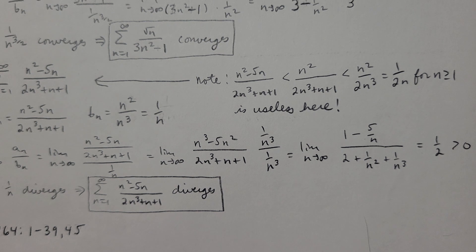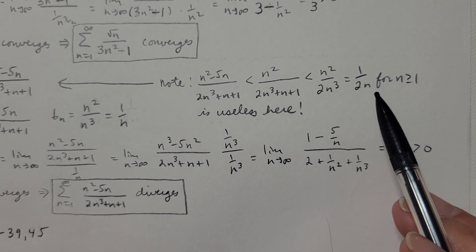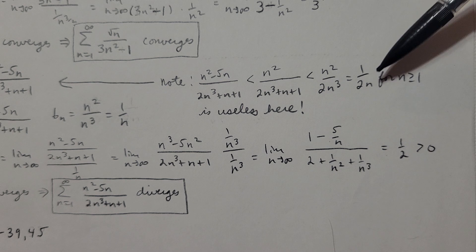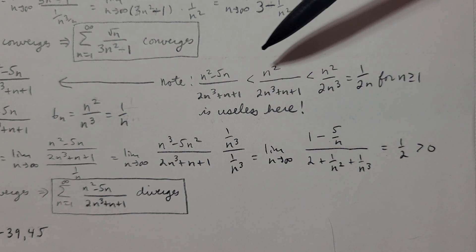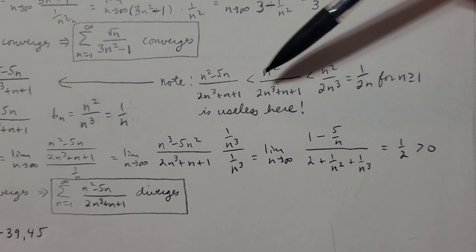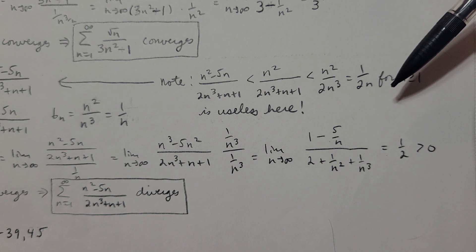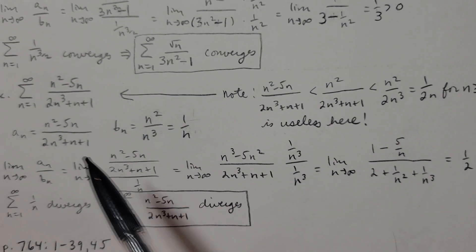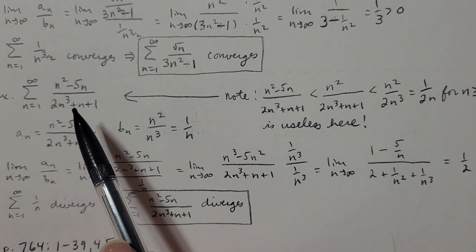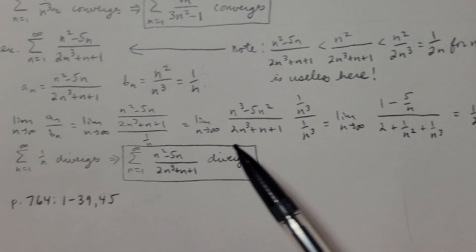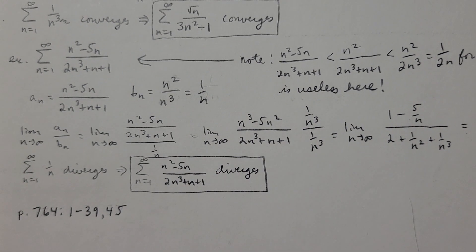Simplifying n²/(2n³) gives 1/(2n). The series Σ 1/n from n=1 to infinity is divergent, but I'm comparing it to something whose terms are less than 1/(2n), so this tells me nothing — the original series could converge or diverge. The standard comparison test doesn't work here, so plan B is to use the limit comparison test.